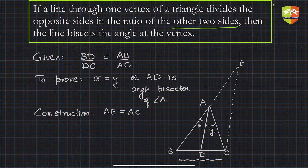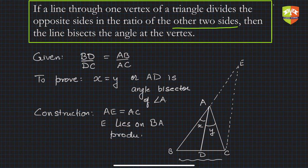The construction is: draw AE such that AE is equal to AC. E lies on BA produced — that is, we extend BA beyond A and mark point E such that AE equals AC.